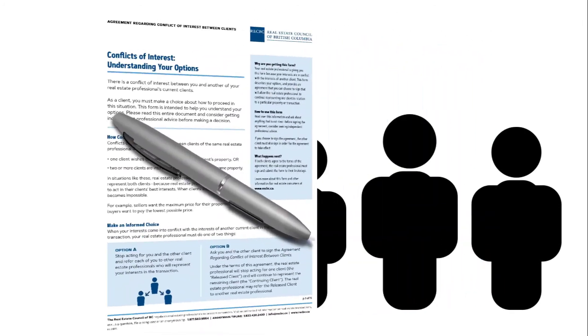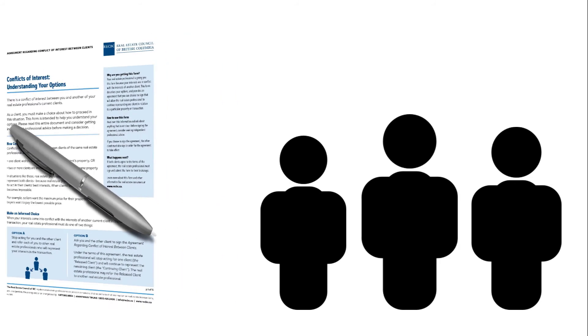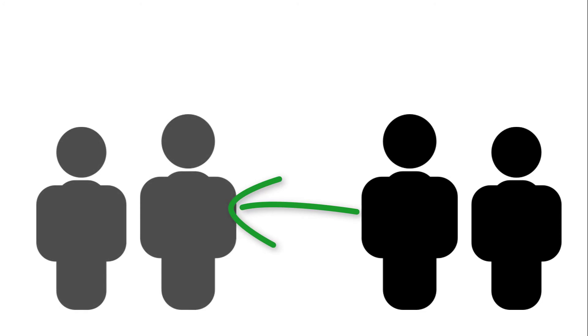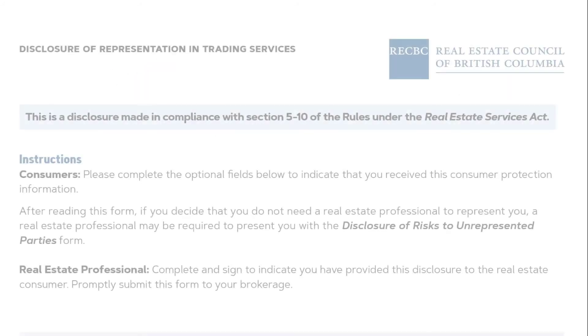In the event that a realtor has a relationship with both a buyer and seller, or a tenant and a landlord, the realtor must not represent either party unless they have obtained written consent from all parties. If this happens, a realtor can provide a referral to another designated agent who can provide the client with an agency relationship.